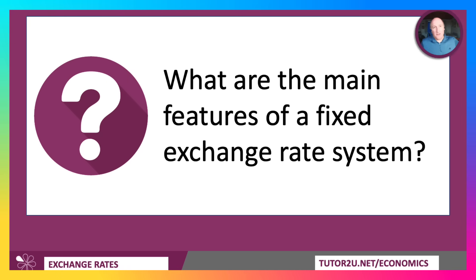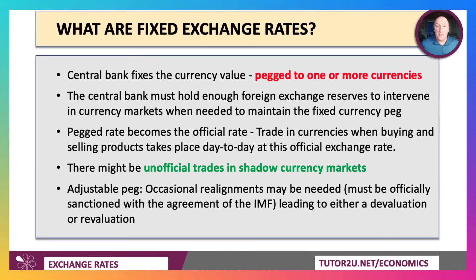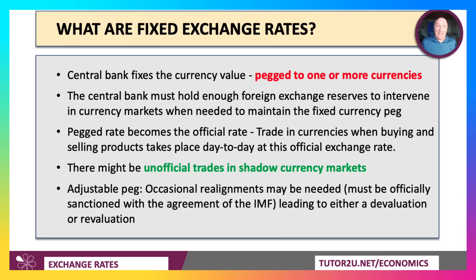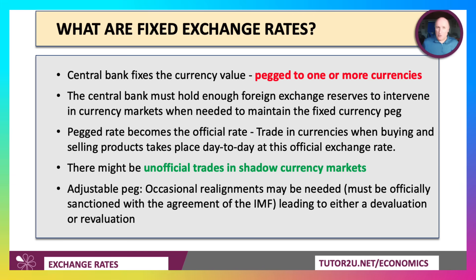With a fixed exchange rate, the central bank fixes the currency value — the currency becomes pegged or anchored to one currency or maybe a range of currencies. Crucially, if you have a fixed exchange rate, the central bank must hold enough foreign exchange reserves to intervene if and when needed in the currency markets to maintain the official currency peg. The pegged rate becomes the official exchange rate, so when buying and selling imports and exports, trading currencies takes place officially at the day-to-day official rate — though there's often some unofficial trading, particularly if the official exchange rate is out of line with economic fundamentals.